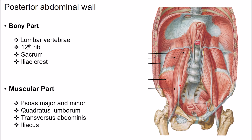The muscular part is formed by the psoas major muscle, psoas minor muscle, quadratus lumborum, and transversus abdominis. In the lower part, it is formed by iliacus on the lateral side, whereas on the medial side by the tendon of psoas major.